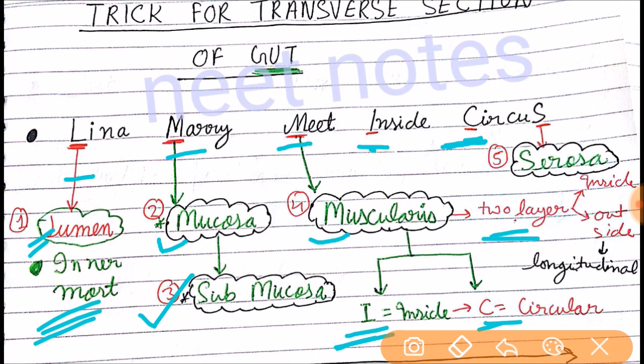So inside muscle is circular and outer is longitudinal. This is the trick that you can follow to easily remember all the layers from inside, from lumen as the innermost, to the outer one. S for serosa, serosa is the outermost layer.